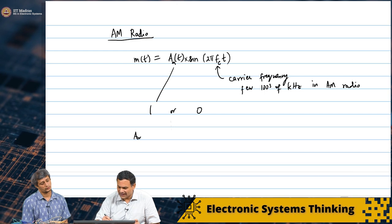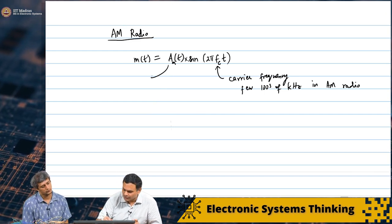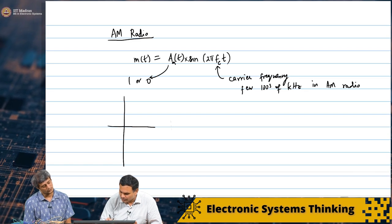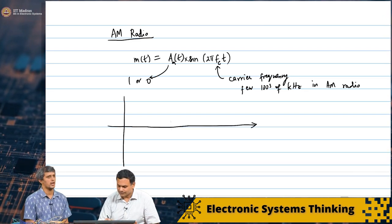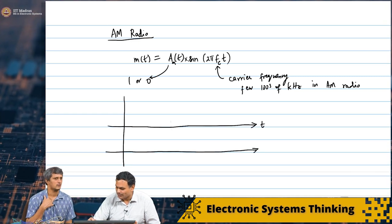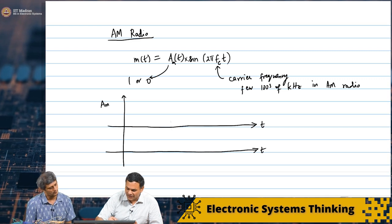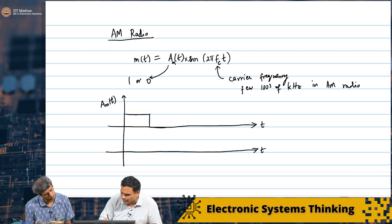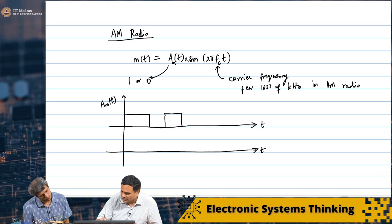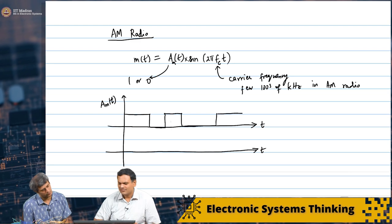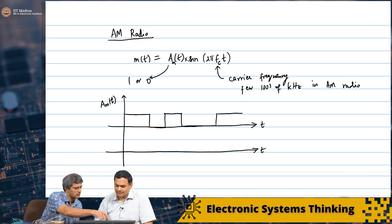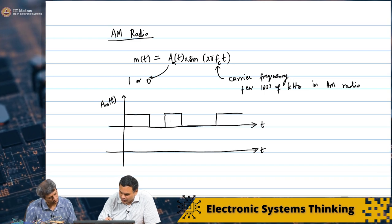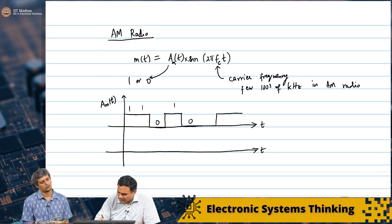Let us plot it. This is 1 or 0, and I will show 2 plots. We will also take a fixed bit pattern for M of t. First I will plot AM of t, and let us say it looks like this: it starts with 0, maybe 1, 0 for some time, starts with 1. So the bit pattern is something like 1, 1, 0, 1, 0, 0, 1, 1. Just like in the wired case, for a time period t, you are sending either 1 or a 0 depending on the message.